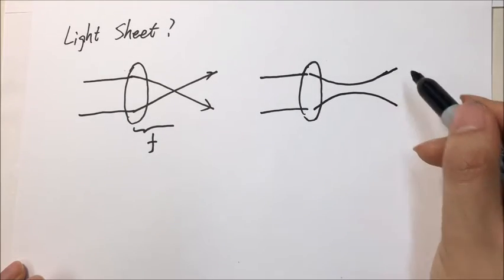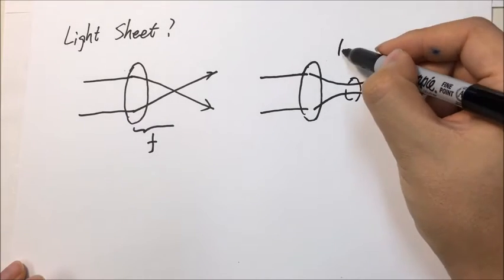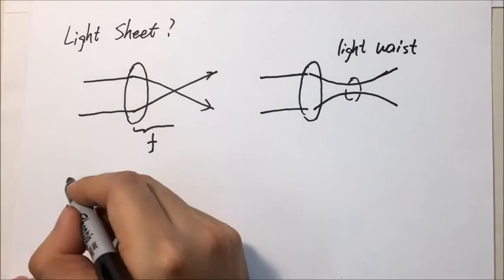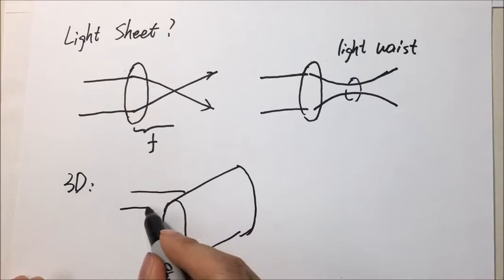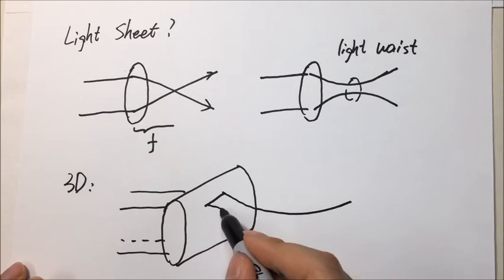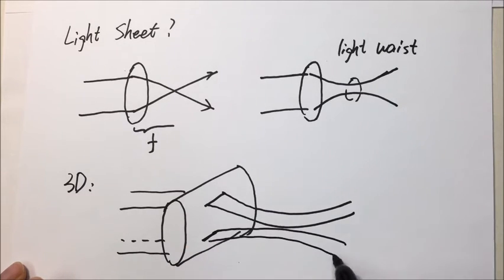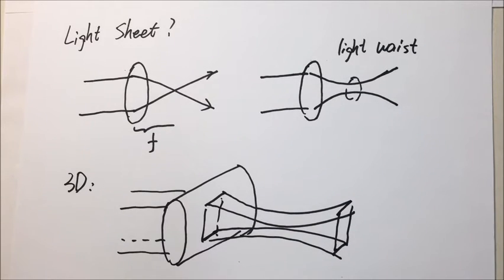The position where the beam width is smallest and the intensity is largest is called the light waist. Now, if we consider this in three dimensions, the lens becomes a cylindrical lens. The light beams going through the lens will focus in one dimension and become a light sheet.